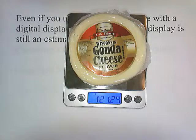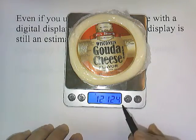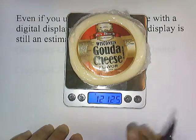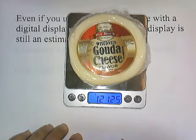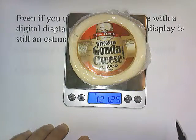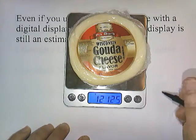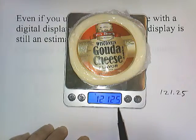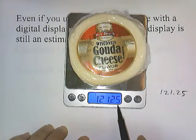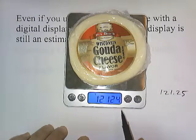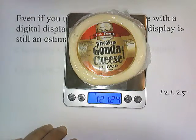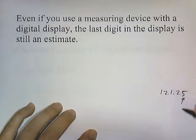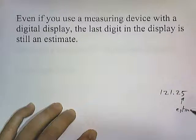The last digit is an estimate because we're writing it down under those exact conditions at a certain time. As time changes, the temperature and air pressure conditions can also change. So now it's at 121.25. Best estimate, 121.25, although a few moments ago it was 121.22. Again, since this is changing, it's an estimate, even though it's a digital display.